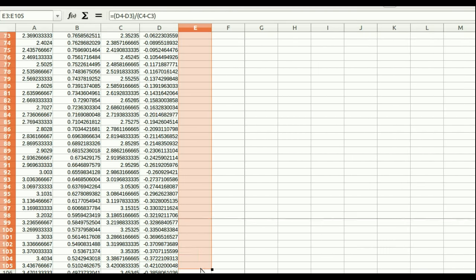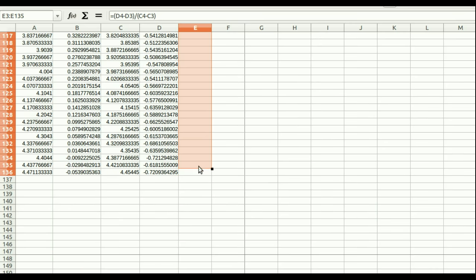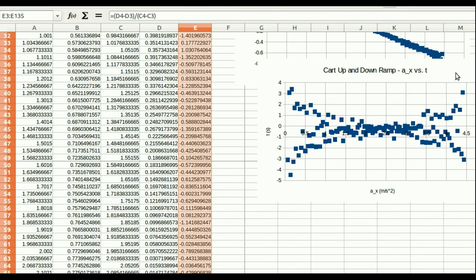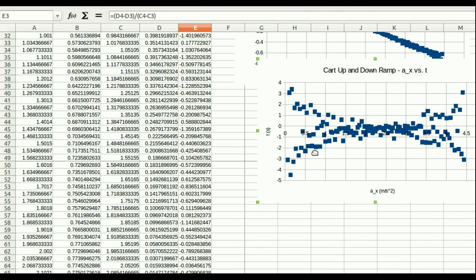And so, there is my acceleration column. And I set it up so it would plot. And look, look at how much scatter there is in the acceleration.